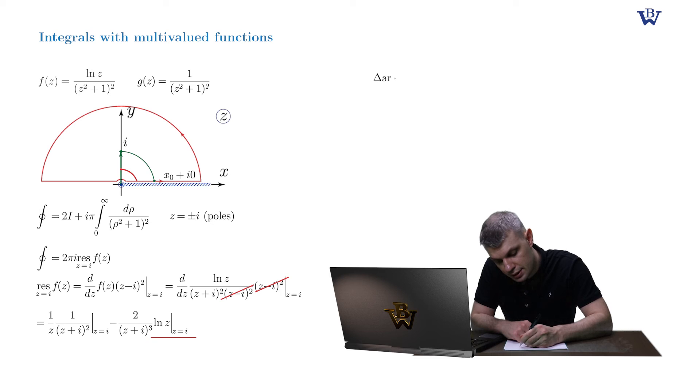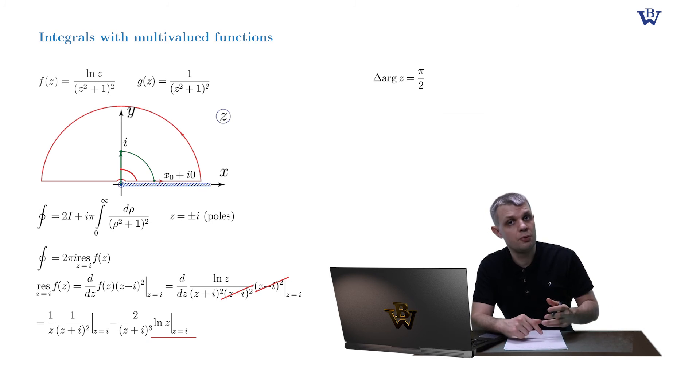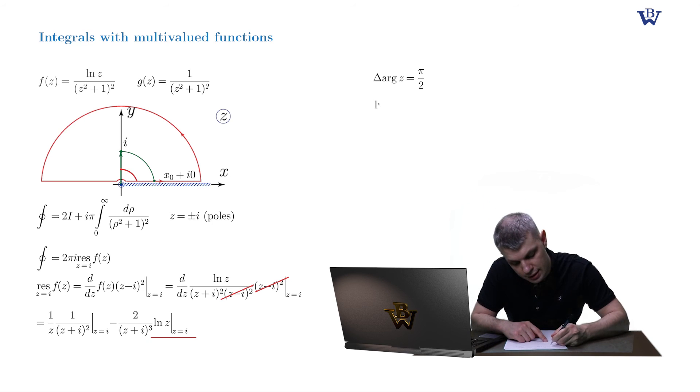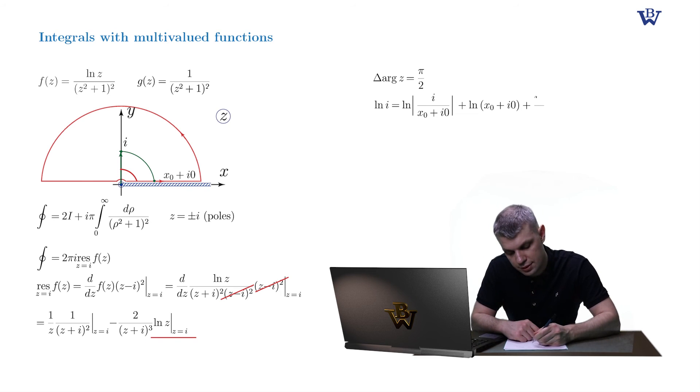So delta argument of z is obviously pi by 2. Now we write down the standard formula for the regular branch of the log function. Log of i is equal to log of the modulus of i divided by x naught plus i zero, plus the log of x naught plus i zero without modulus sign, and plus i times the change of the argument, so i pi by 2.